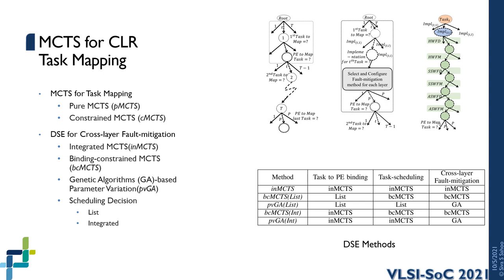Similarly, we categorized the design decisions in cross-layer integrated task mapping into binding, scheduling, and cross-layer reliability configuration. A variation of exploration methods for these three types of design decisions was implemented for comparison. The table here shows the resulting DSE methods, where the exploration of a particular design decision could be through Monte Carlo tree search, through genetic algorithms, or through a list-based scheduling.